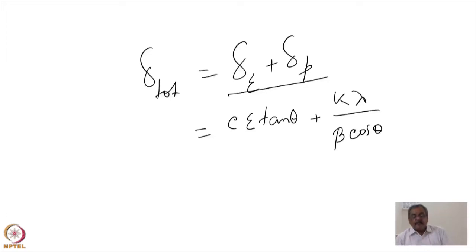Now please note that I have written this as a summation. Summation means I assume in this that the broadening due to strain and the broadening due to particle size, they are independent of each other and I can add them up independently. So this is an assumption.